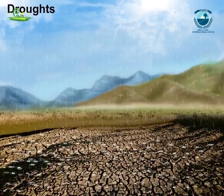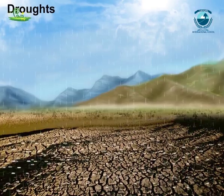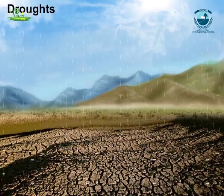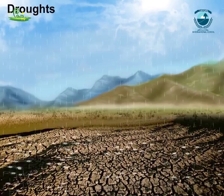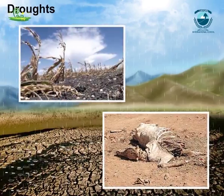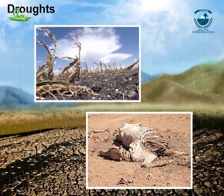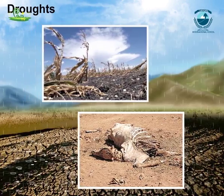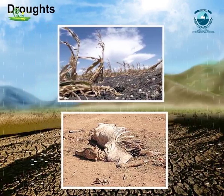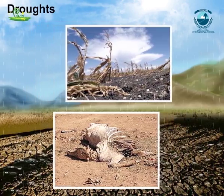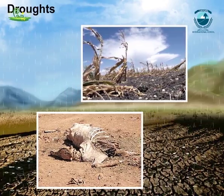Droughts are caused by lack of rain over a long period of time. Even if rain occurs, water gets evaporated before being absorbed in the ground. Plants absorb water from the ground and eventually die due to lack of water.